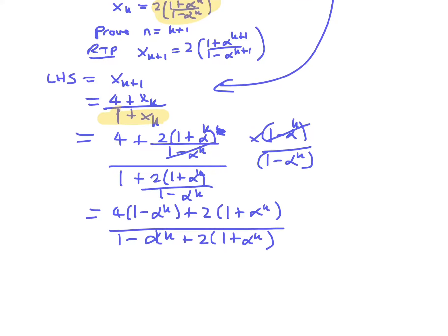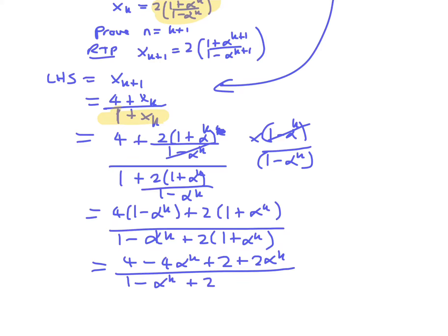So if we collect like terms, we have 4 minus 4 alpha^k plus 2 plus 2 alpha^k on top, all over 1 minus alpha^k plus 2 plus 2 alpha^k on the bottom. So that's going to be (6 minus 2 alpha^k) over (3 plus alpha^k).